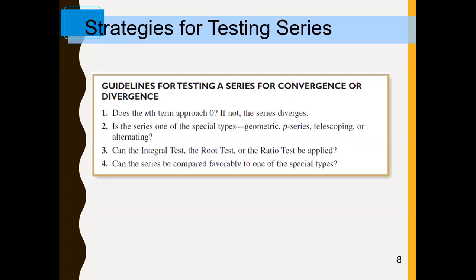So, guidelines for testing a series for convergence or divergence. This is how my brain works — I typically go straight for the nth term test, and I simply ask the question: does the nth term approach zero? If not, the series diverges immediately — you're already done. If the terms approach zero, though, you move on to some other approach to try to sort things out. The nth term test is the first thing you should always try as a kind of hierarchy of tests you apply.